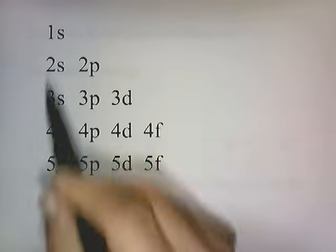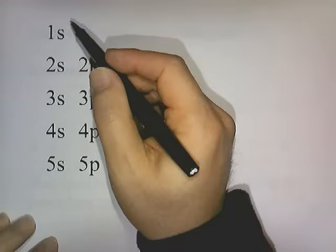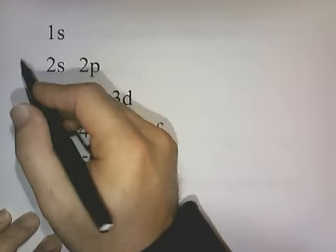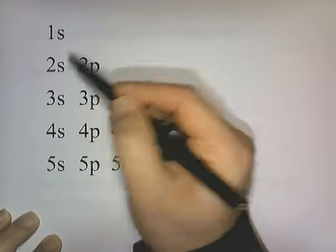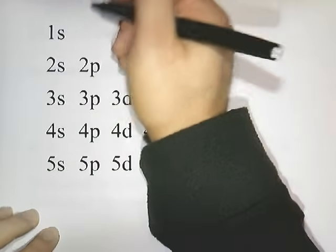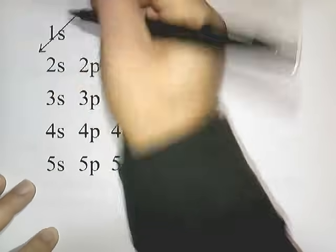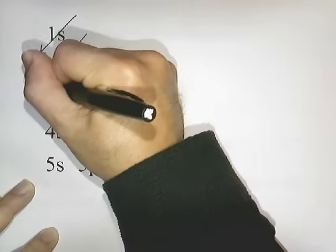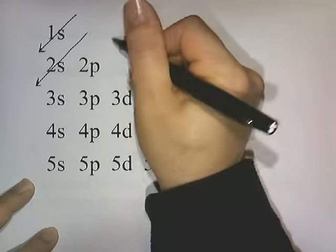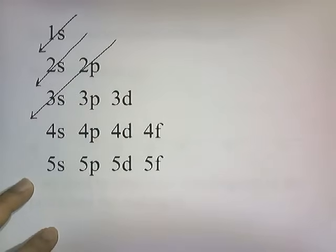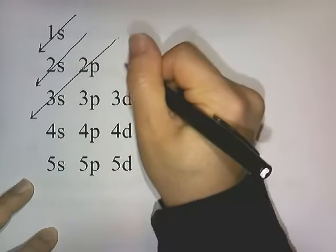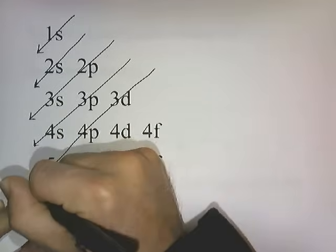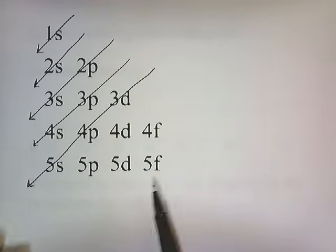What we're going to do is draw arrows through each of these terms. The arrows start from the top right and go down to the bottom left, slicing through the first term of each horizontal row. The first arrow goes through 1S. The next goes through 2S. The next goes through 2P and 3S. The next goes through 3P and 4S. And the next goes through 3D, 4P, and 5S. We only need to go up to 5.